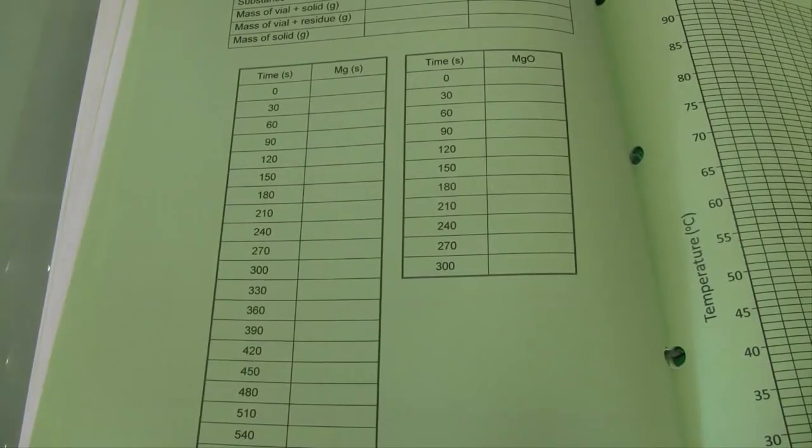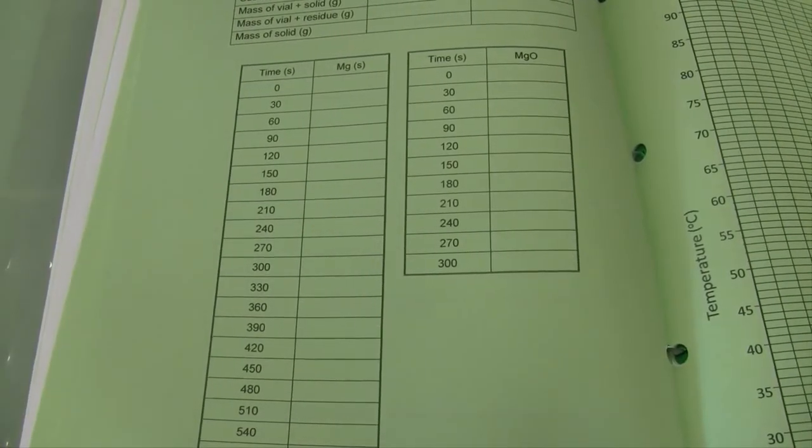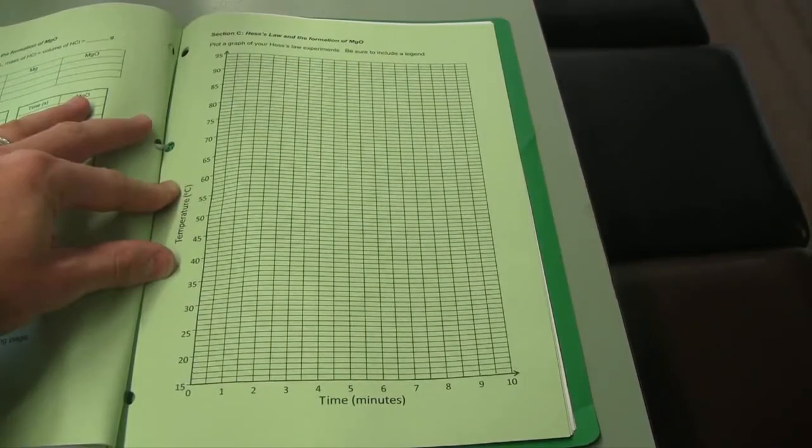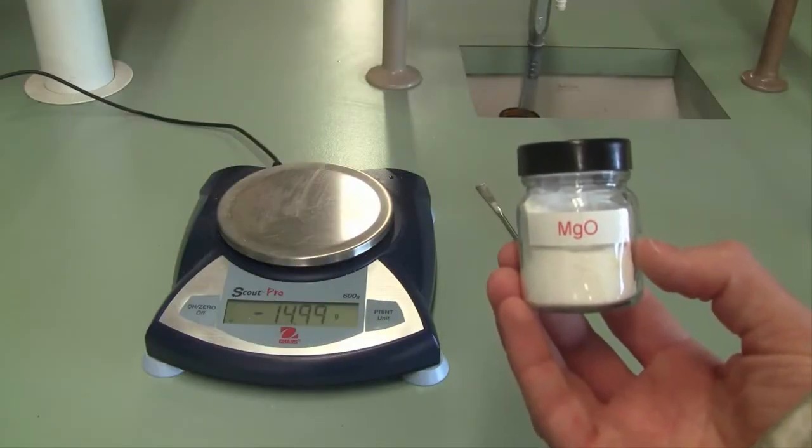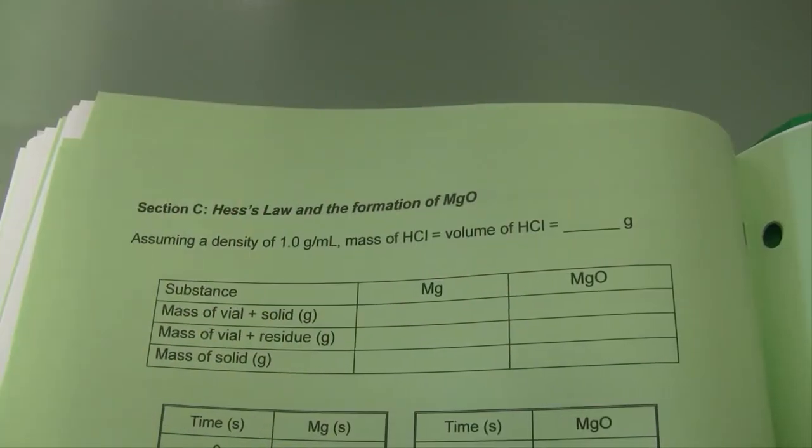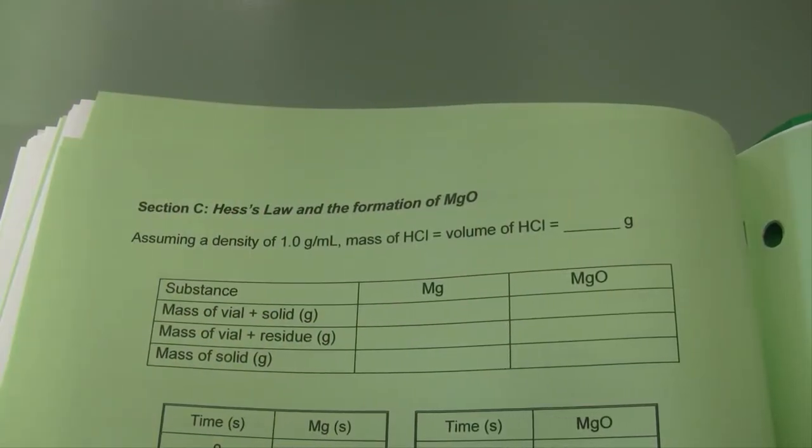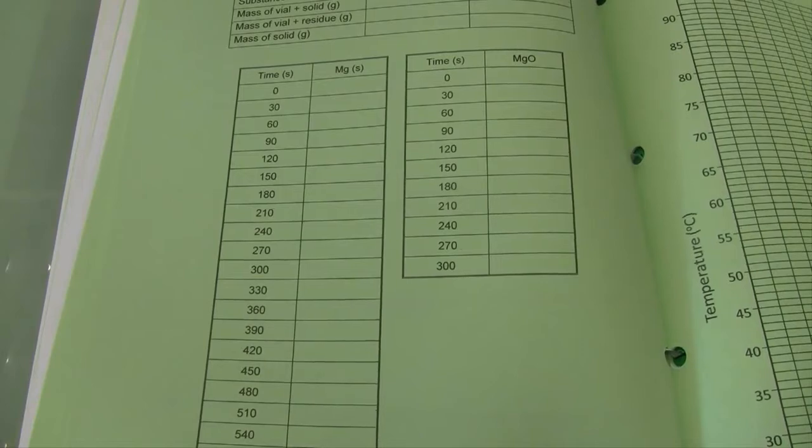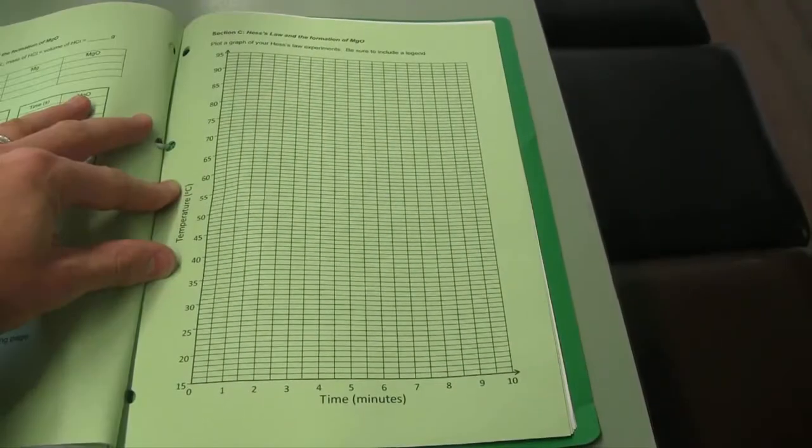Keep track of your temperature as a function of time, you'll need to keep track of this particular reaction for 10 minutes. Repeat this process using magnesium oxide instead of magnesium. Once again, record the mass accurately by weighing by difference. This time you can record the temperature over a 5 minute time period, and plot your results on your graph provided.